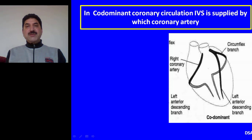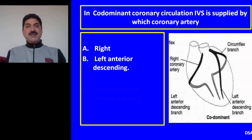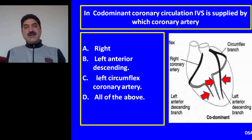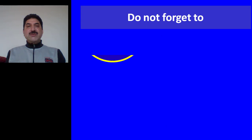Question 3: In co-dominant coronary circulation, the interventricular septum is supplied by which coronary artery? Options: Right; left anterior descending; left circumflex coronary artery; all of the above. All of the above is the correct option. In co-dominant circulation, septal branches from the left anterior descending coronary artery supply the anterior two thirds of the septum, and septal branches from both the right and left coronary artery supply the posterior one third of the septum. Thus, the right, left anterior descending, and left circumflex coronary arteries all supply the interventricular septum.